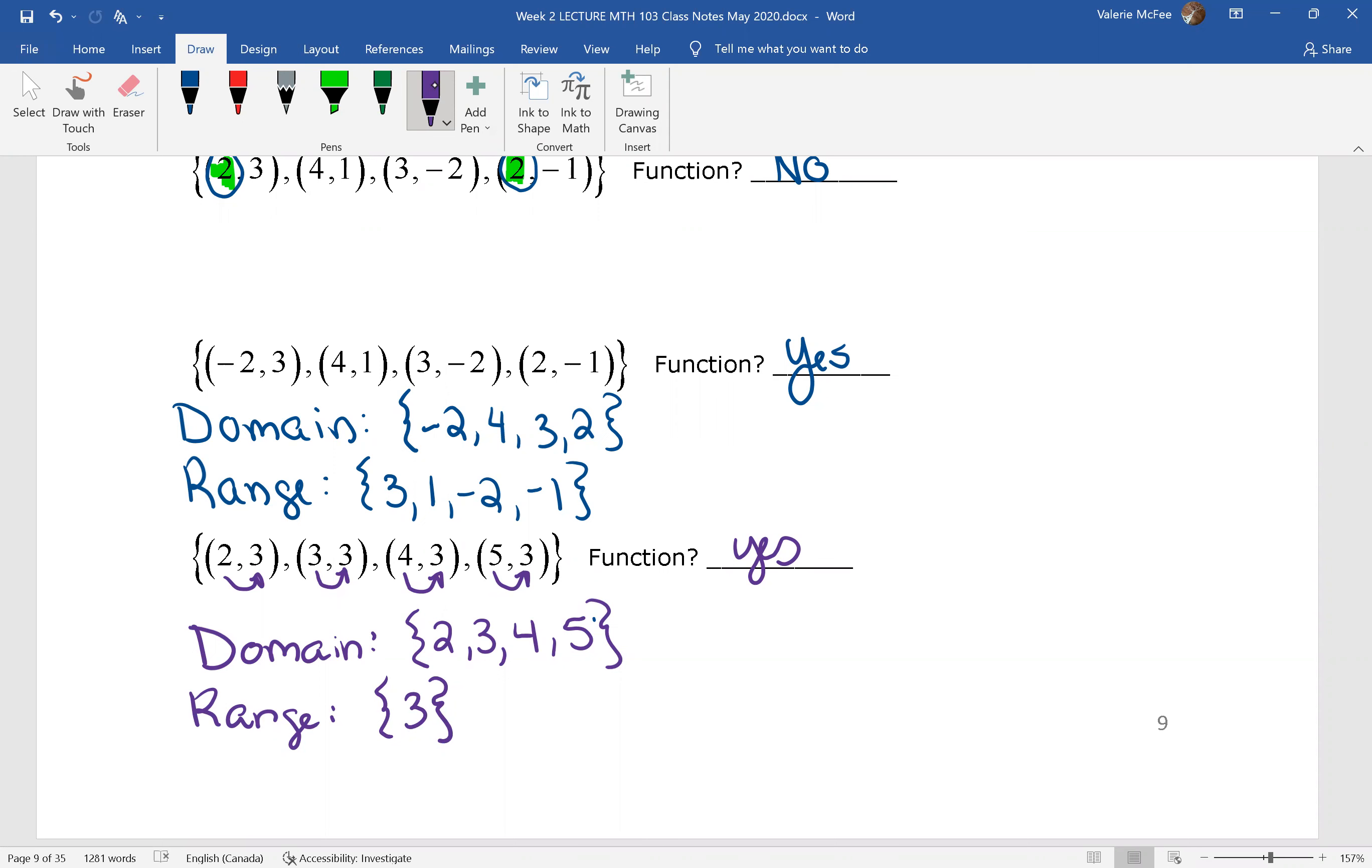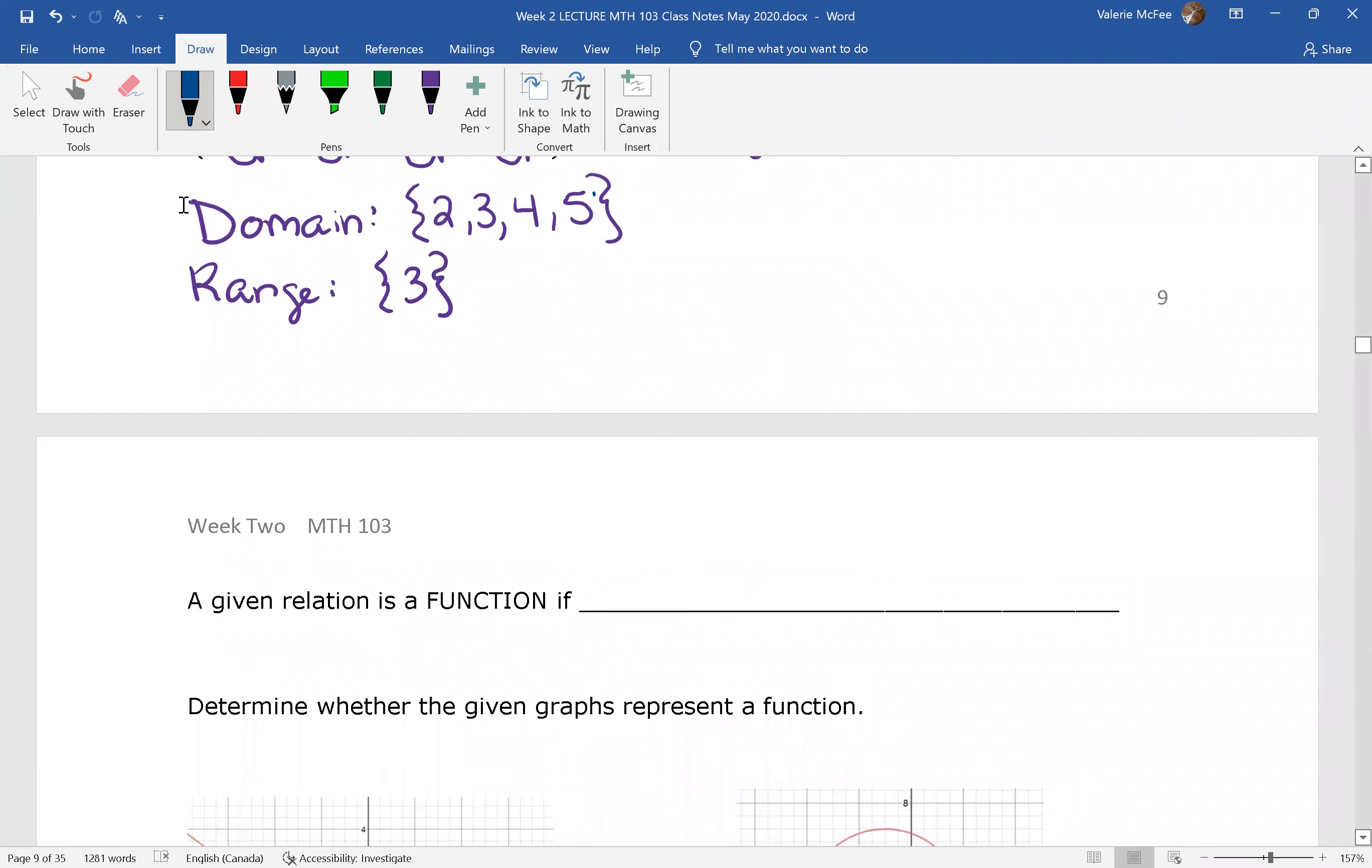Notice that in our functions, X cannot repeat. This is not a function because their X value is repeating. So we can say then, a given relation is a function if X values do not repeat.